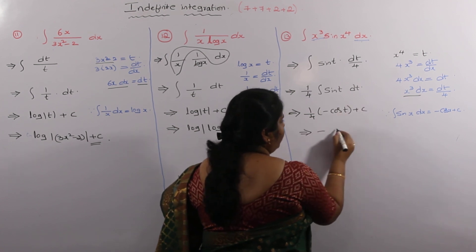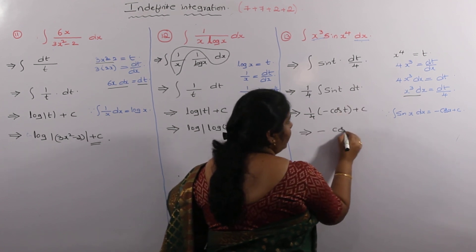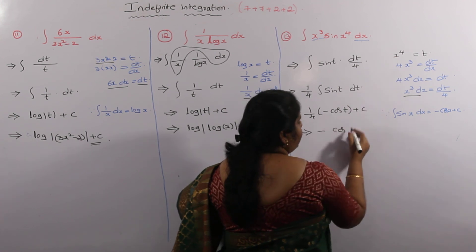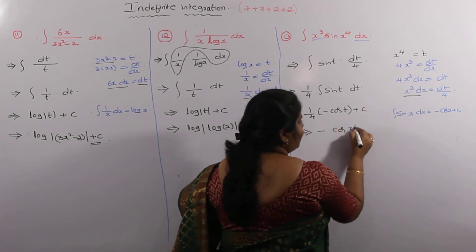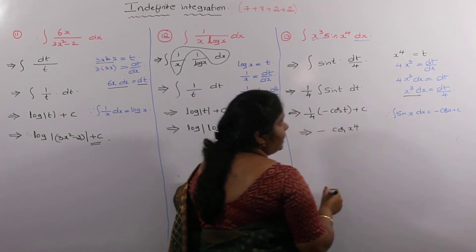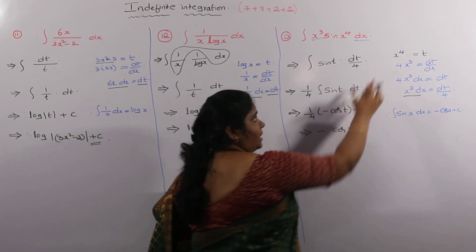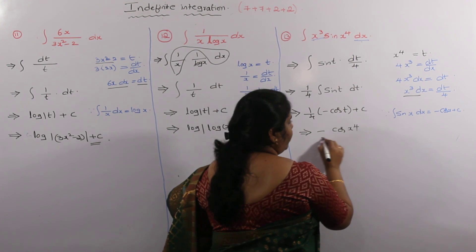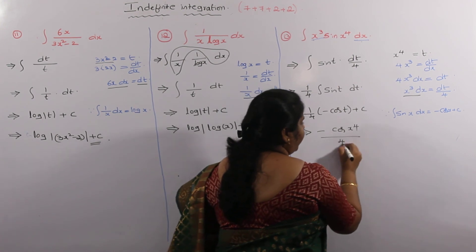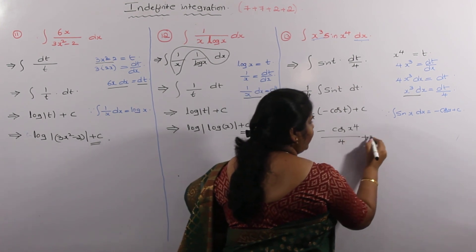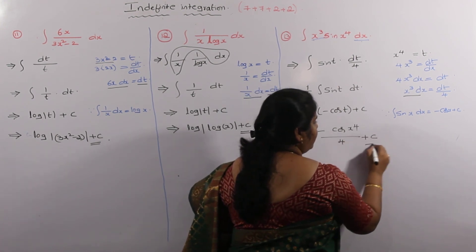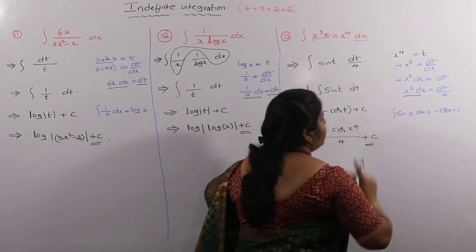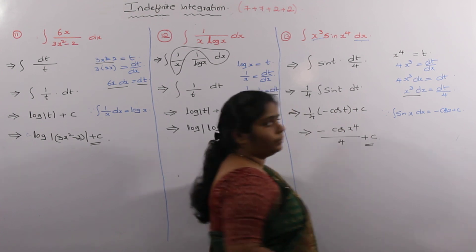But T is equal to x⁴, so substituting back: the answer is (-1/4) cos(x⁴) + C. This is the final answer for this problem.